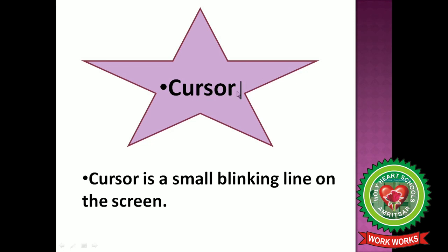This is your cursor — a small blinking line on the screen. When you start typing, you see this line blinking on the screen and it tells the position of the text. So cursor is a small blinking line on the screen.